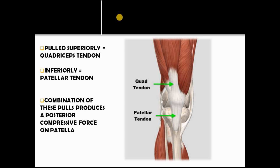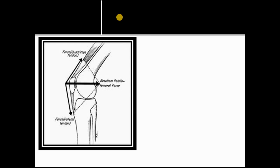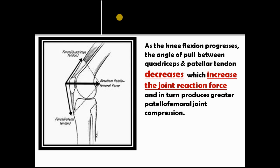The combination of this pulls produces a posterior compressive force on the patella. As the knee flexion progresses, the angle of pull between quadriceps and patellar tendon decreases, which increases the joint reaction force and in turn produces a greater patellofemoral joint compression.